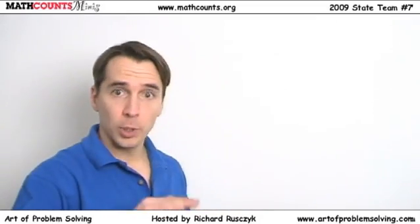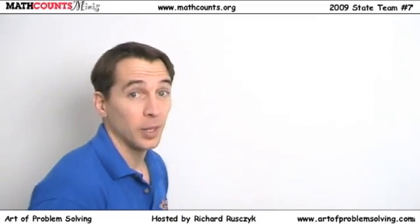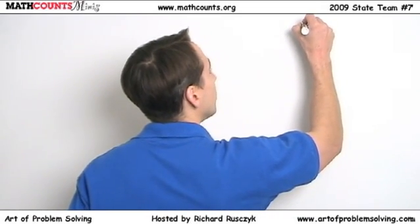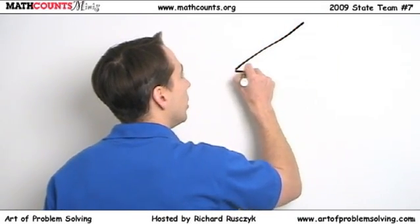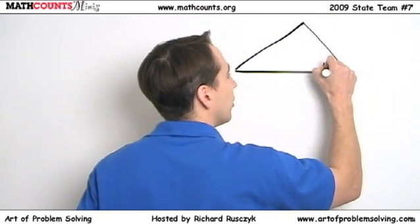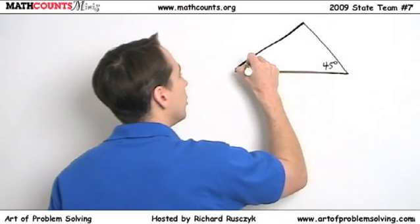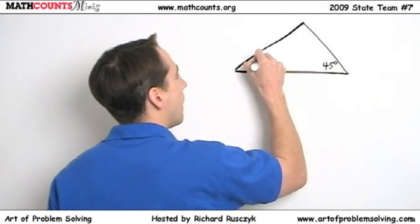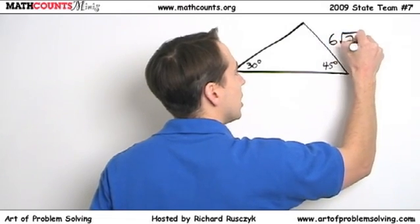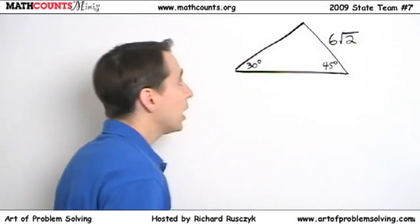We're going to start with this problem the same way we always do with a wordy geometry problem. We're going to draw a diagram and take all the information from the problem and put it in the diagram. So there's our triangle. We'll call this the 45 degree angle, this the 30 degree angle, and the side opposite the 30 degree angle has length 6 times the square root of 2.